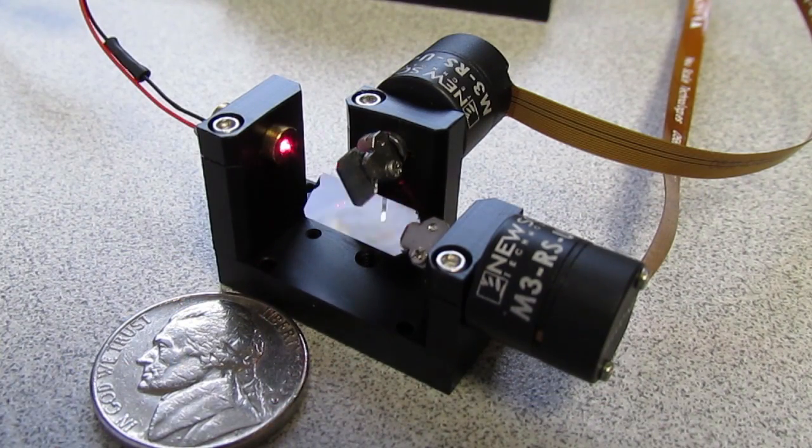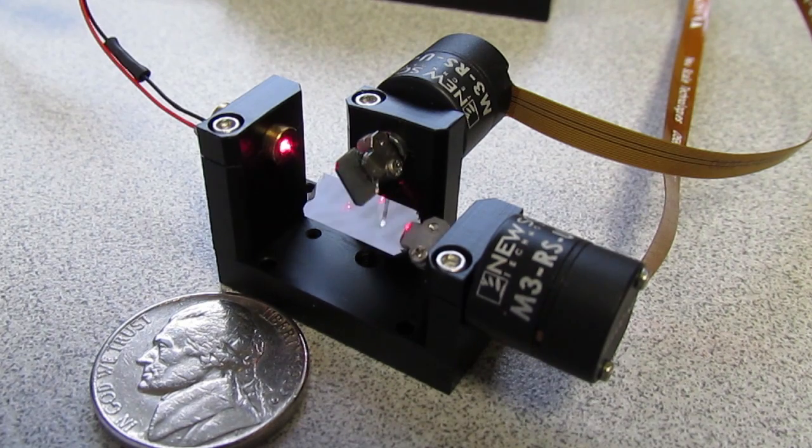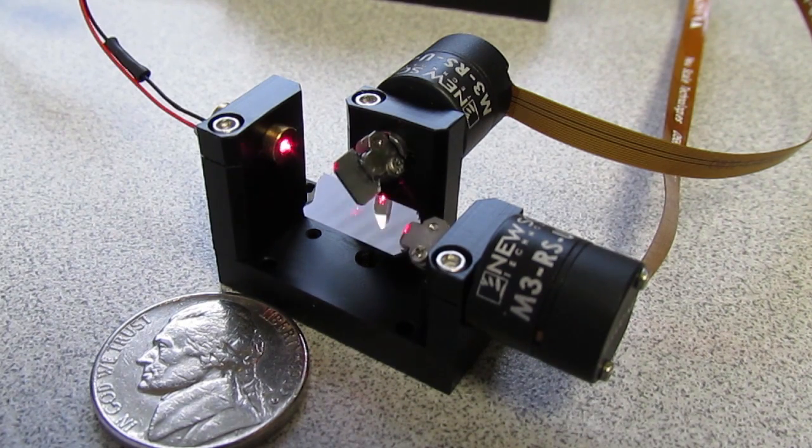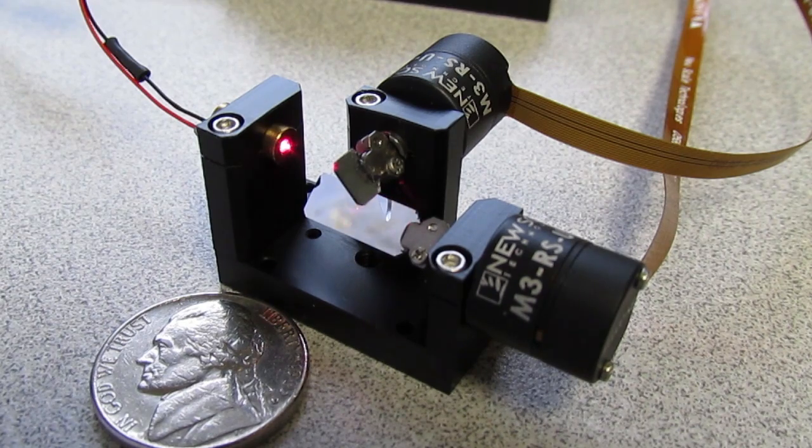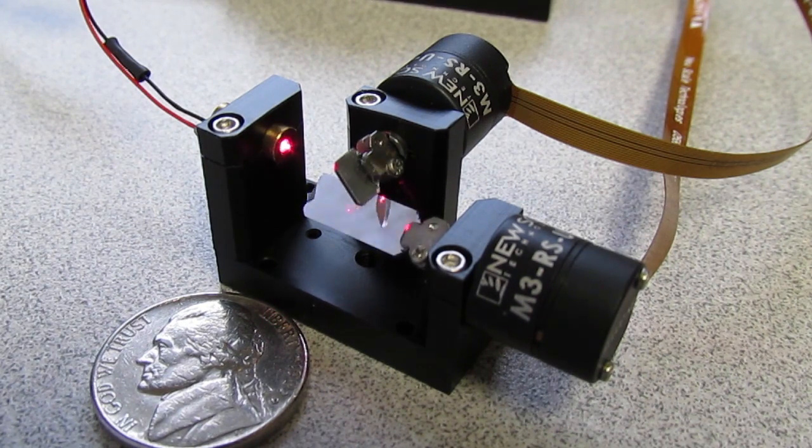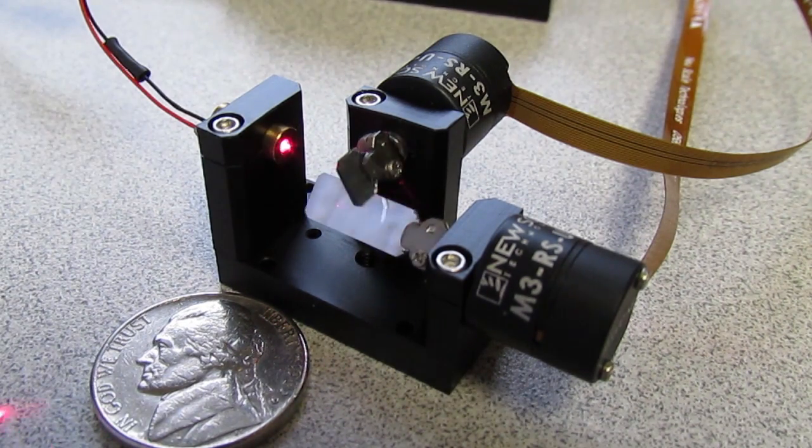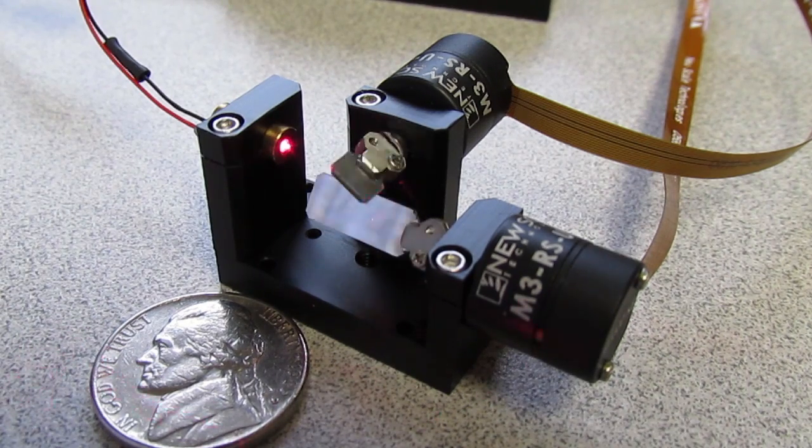Each M3 RSU mirror positioner incorporates piezoelectric motors and magnetic position sensors to move mirrors at up to 1,100 degrees per second with accuracy of 0.25 degrees. The stage has continuous 360 degree rotation.